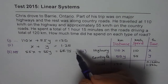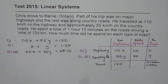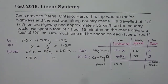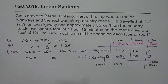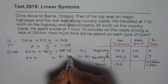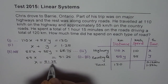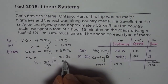Now we subtract equation 3 from equation 1. 110 minus 55 is 55, so we get 55x equals 120 minus 68.75, which in decimals is 51.25. Therefore x equals 51.25 divided by 55, which gives us 41 over 44 hours.